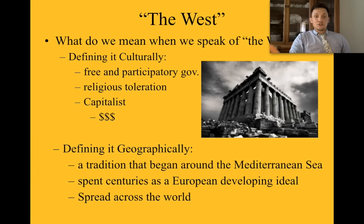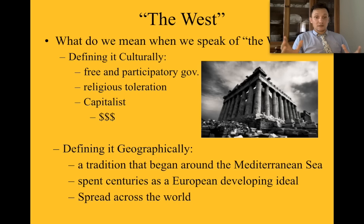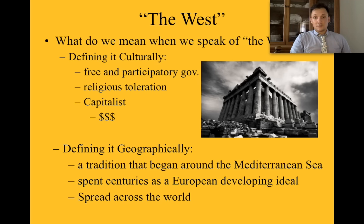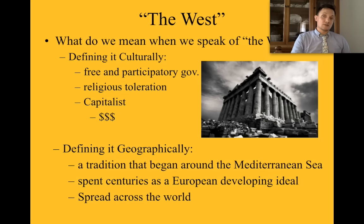Geographically speaking, the West is a tradition that began around the Mediterranean Sea, spent centuries as a European developing idea, and then spread across the world. For example, the Parthenon that you see on this presentation is a Greek historical object — that right there is a part of the West. Now, if that would have been a spire from a Persian city, that would be considered a part of the East.